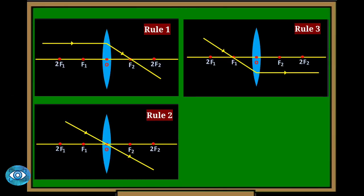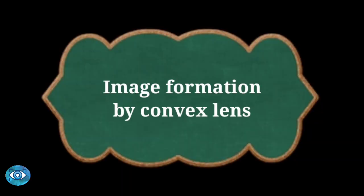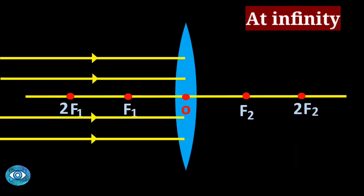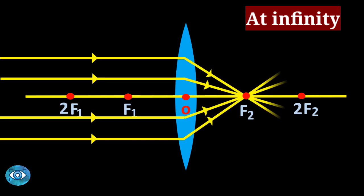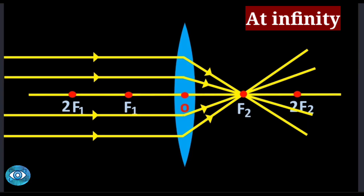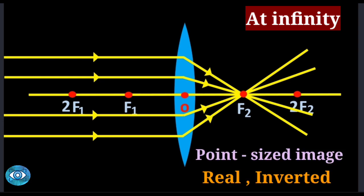Notice that rule number one is opposite to rule number three. Now let's apply these rules for image formation. Case one: when the object is at infinity, far away from the lens, we consider parallel rays and rule number one is applicable. The refracted rays meet at focus f2, and a highly diminished, point-sized image is formed.